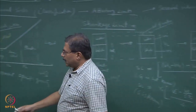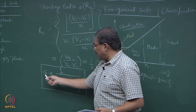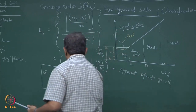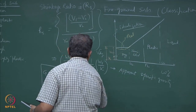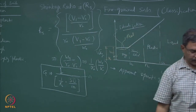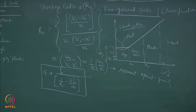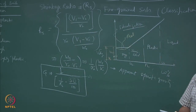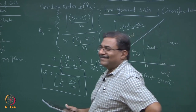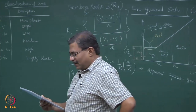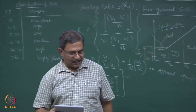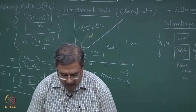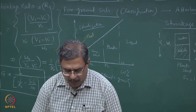This term can also be written as 1 over gamma_w times W_s over V_2, which is defined as apparent specific gravity — weight upon volume is a density term normalized by the unit weight of water. Try to correlate G and R_s: G can be written as 1 over (1 over R_s minus shrinkage limit divided by 100). As I said, this function is used to calibrate the G value — it is a relationship between shrinkage limit and G. Hope you have enough mathematics now. Start solving these problems, you will become an expert.